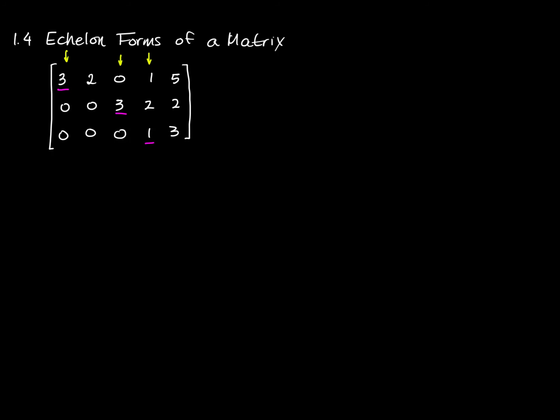I will say that the pivot is the number 3 for row 1, the number 3 for row 2, and the number 1 for row 3. So the pivots are 3, 3, and 1.